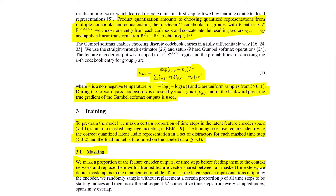The Gumbel-softmax maps the feature encoder output into L, then uses L as a proxy for computing gradients for the discrete codebook entries. This is done using a softmax over all vectors L, made more uniform using a temperature operation and noise drawn from the uniform distribution. During the forward pass, the entry Y is chosen using the argmax operation, and during the backward pass, the Gumbel-softmax operation is used.